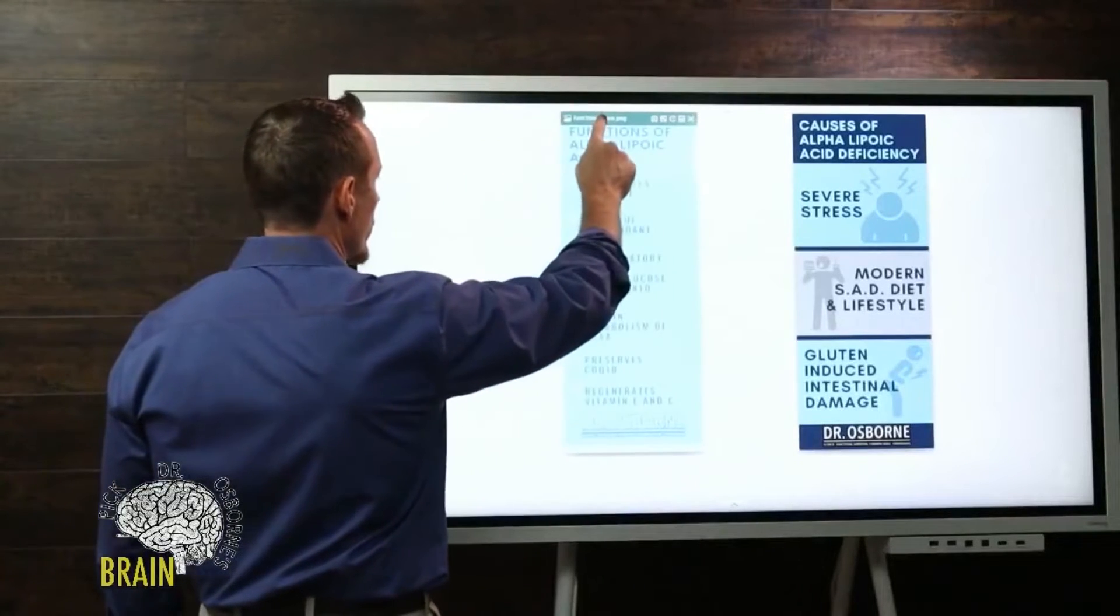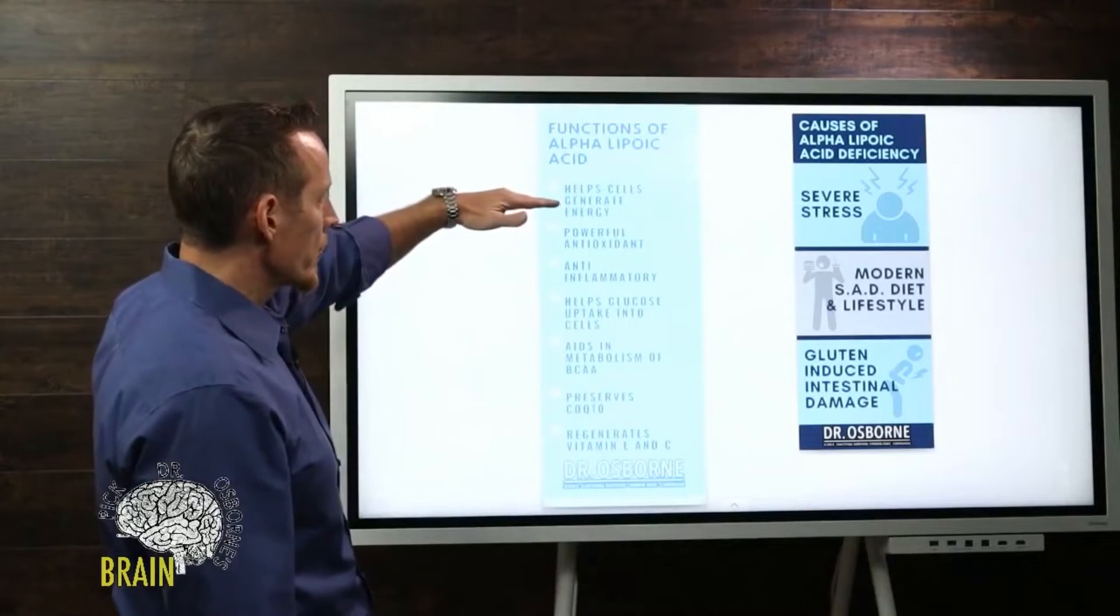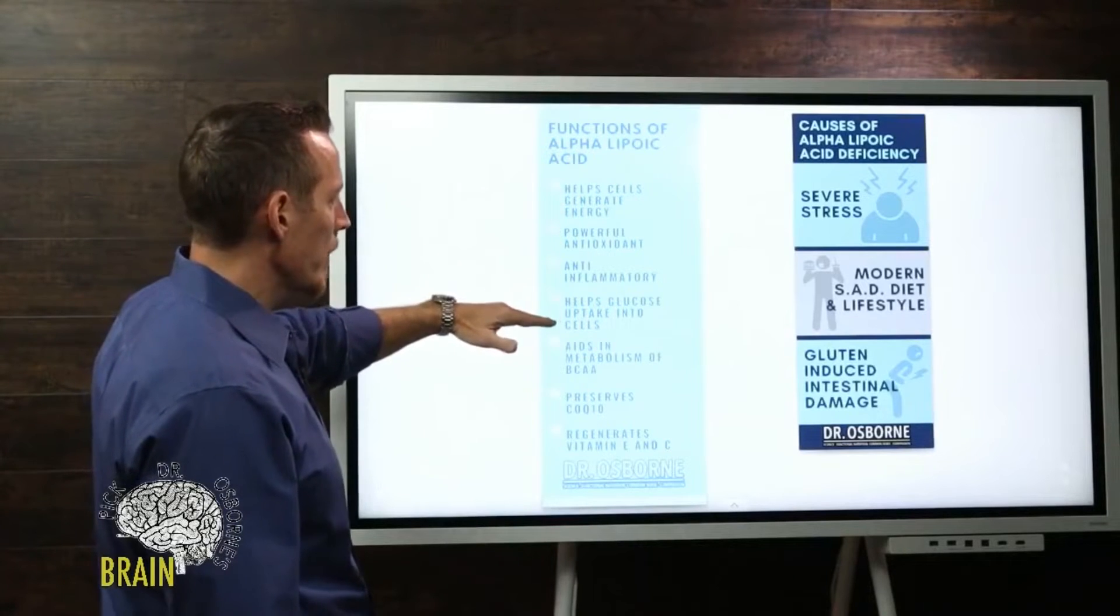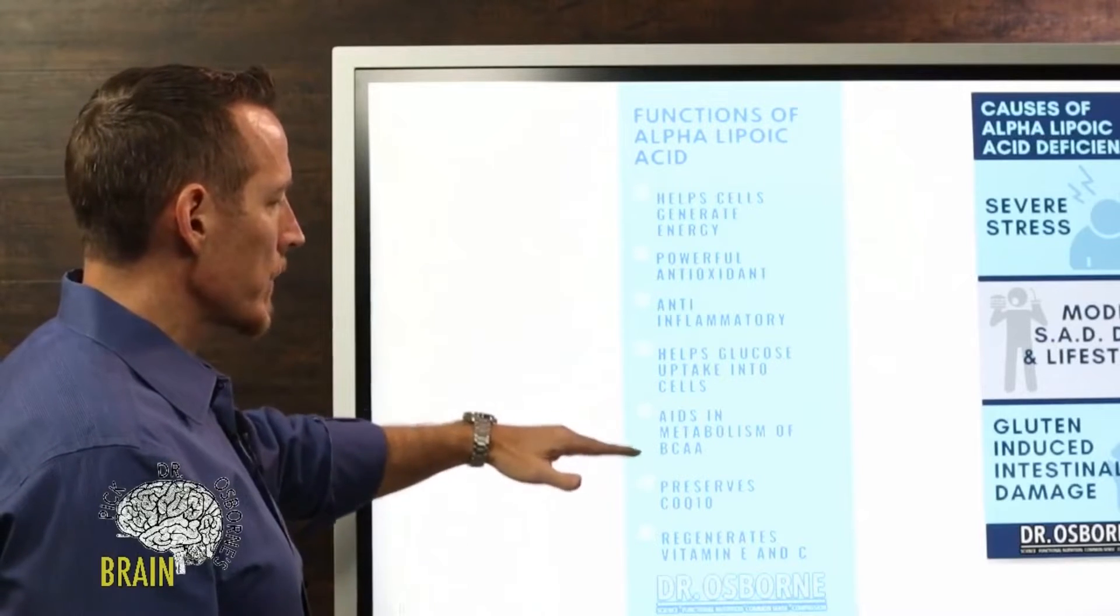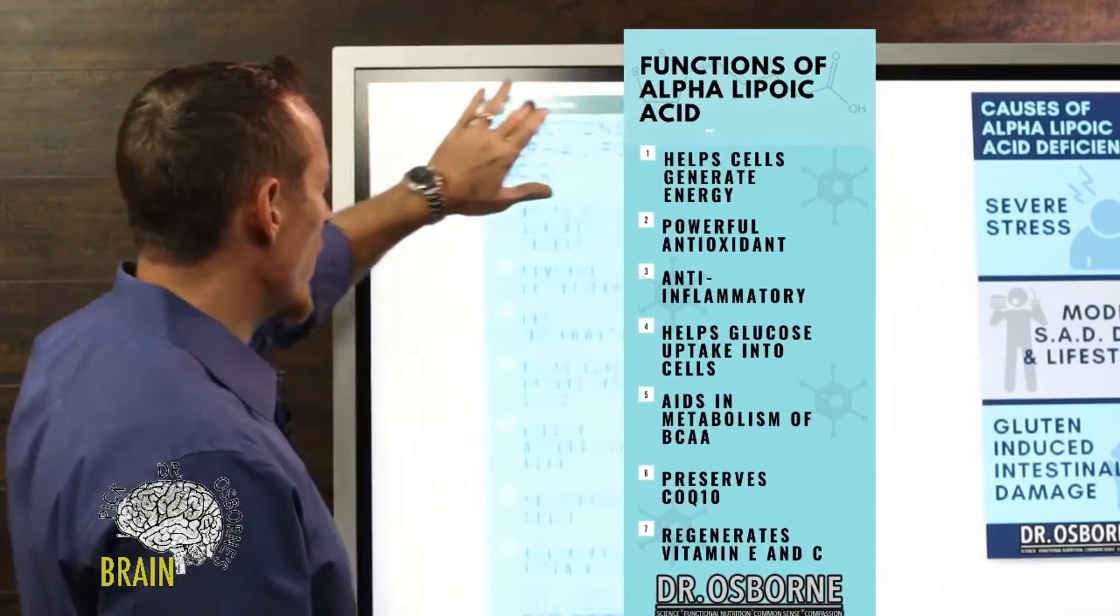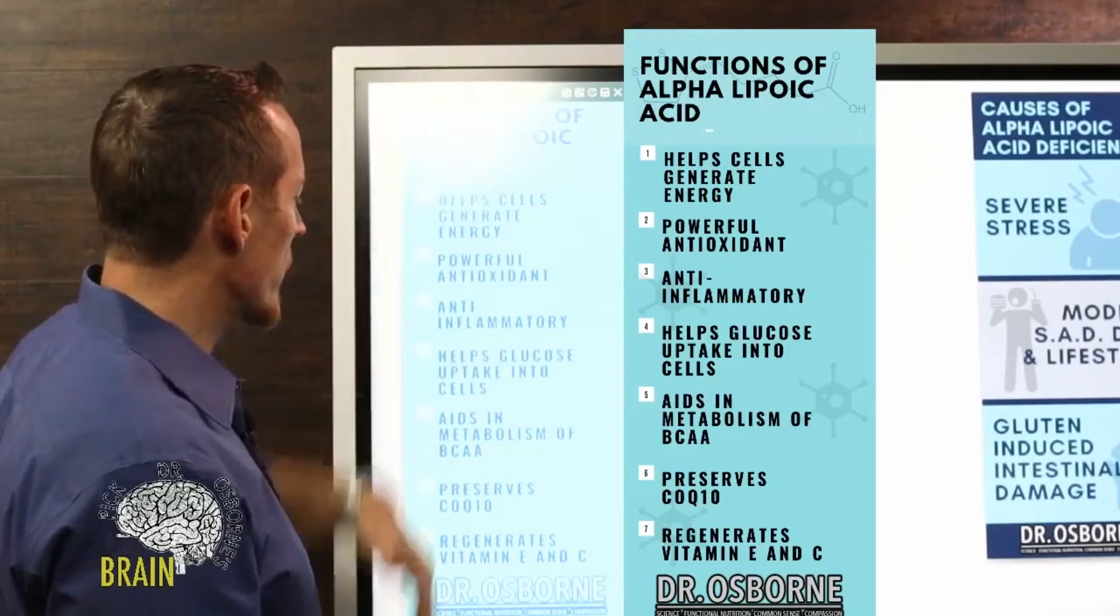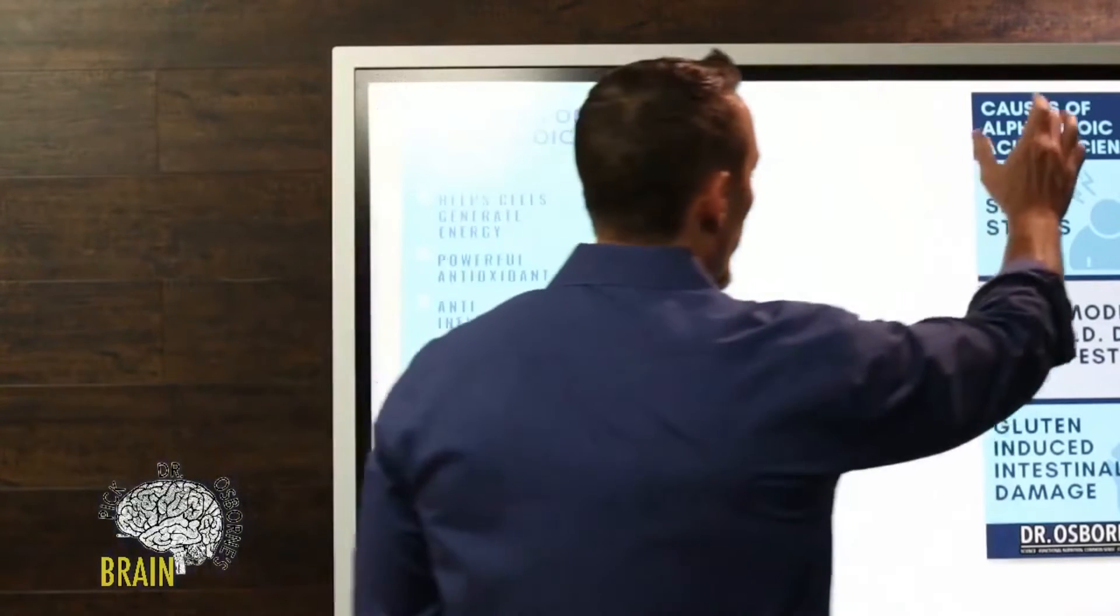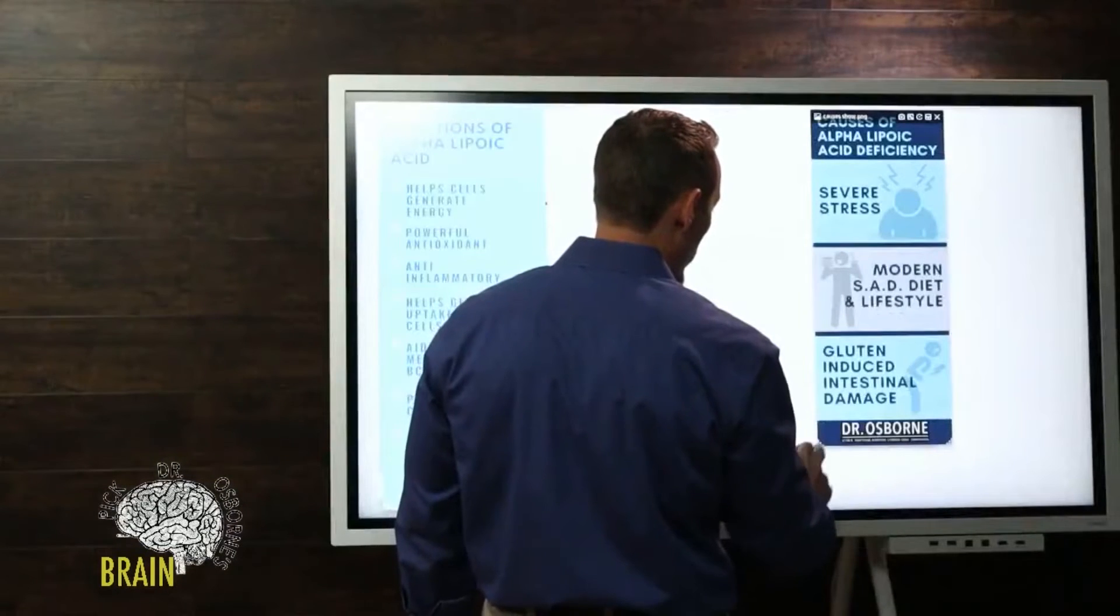The functions of lipoic acid: cellular regeneration, antioxidant function, anti-inflammatory function, helps with blood sugar levels, aids in branch chain amino acid metabolism, preserves CoQ10, and regenerates vitamin E and vitamin C. These are all major functions. It also plays a role in how your body generates energy in your mitochondria.